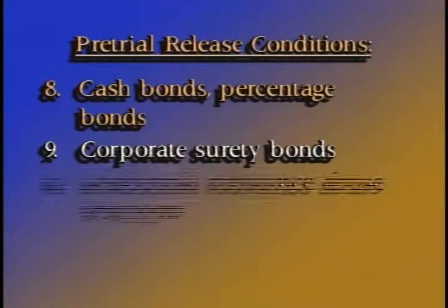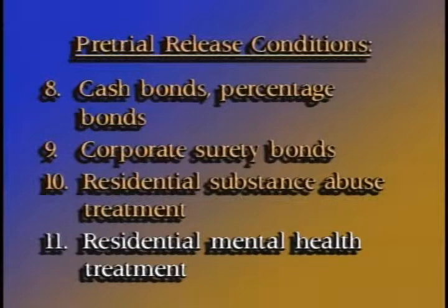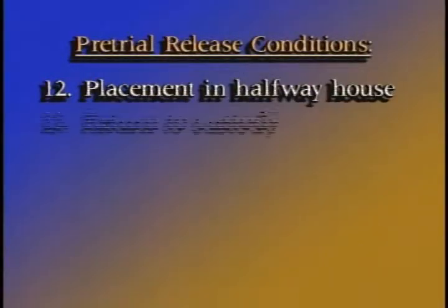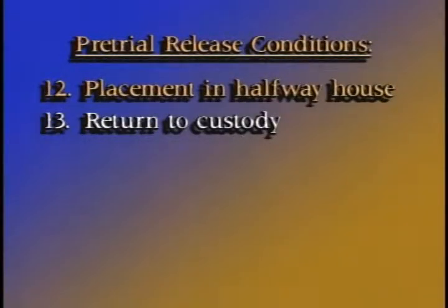Two other release conditions closely related to each other are residential substance abuse treatment and residential mental health treatment. These community-based conditions are intended for defendants whose substance abuse or mental health problems can only be controlled by inpatient treatment. Pretrial services may have residential facilities under contract to provide immediate admittance. Placement in a halfway house or periodic return to custody are two other available release conditions. Placement in a halfway house can be a very useful means of ensuring control and supervision, providing needed services, and avoiding the cost of jail. With periodic return to custody, the defendant spends nights and weekends in jail for specified hours, but is released to go to work or attend school.